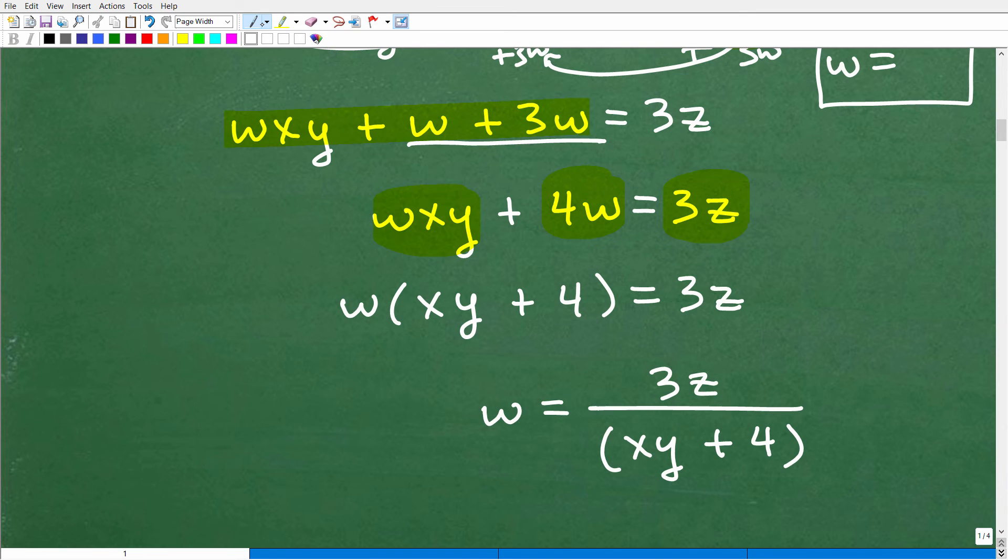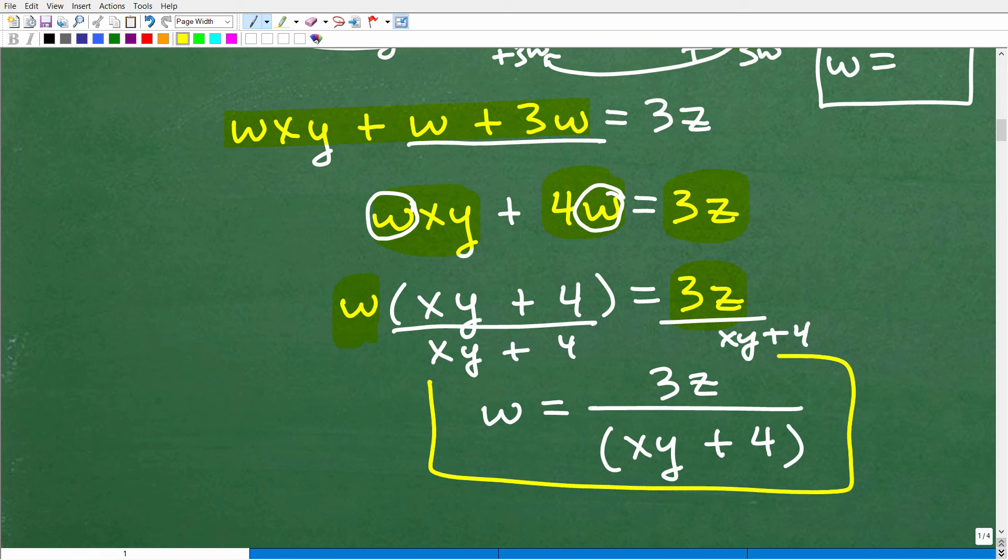But at this point of the problem, if I want to get W by itself and I got W intertwined with these terms, I'm going to have to factor out a W. And I can do that because W is a common factor here. So let's factor out the W. So I have W times XY plus 4. So W times XY plus 4 is equal to 3Z. And now it's pretty easy to get W by itself. All I need to do is divide both sides of the equation by XY plus 4. And over here, this would be an XY plus 4. And this is the final answer right here. So W is equal to 3Z over XY plus 4.